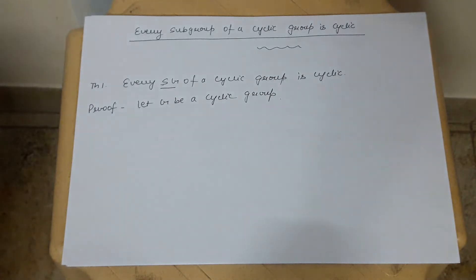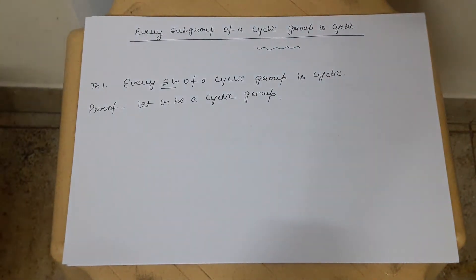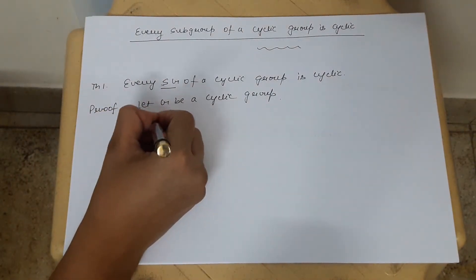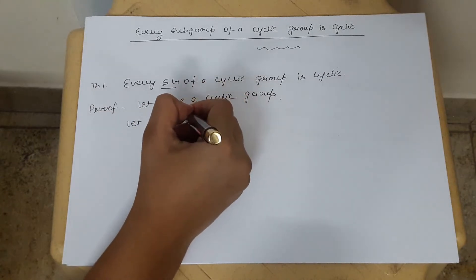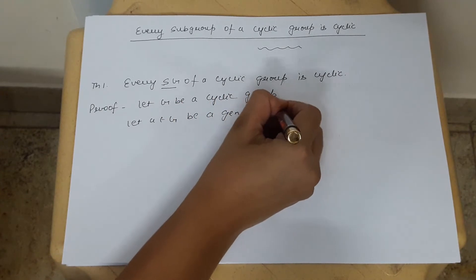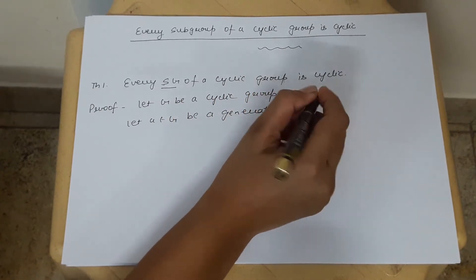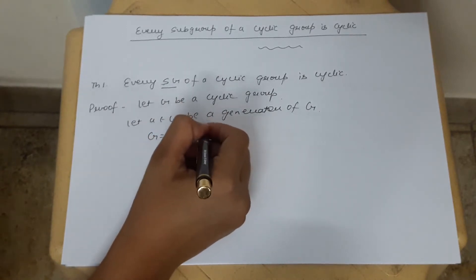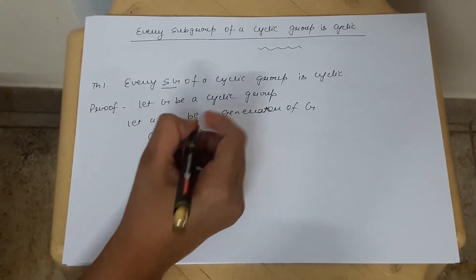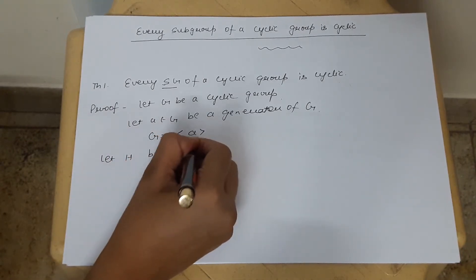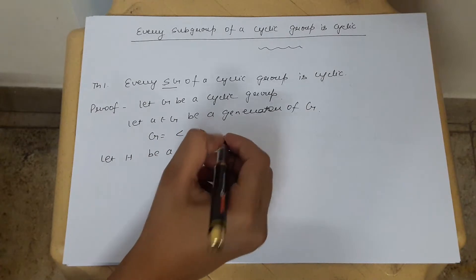We have to prove that every subgroup of a cyclic group is cyclic. Let G be a cyclic group. Since it is a cyclic group, it must be generated by some element of G. Let A belonging to G be a generator of G, so G can be expressed as the cyclic group generated by A. Let H be a subgroup of G.